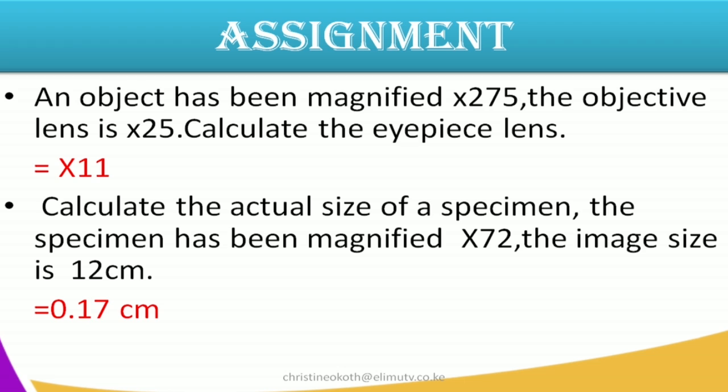Starting with the assignment, question number one: an object has been magnified 275 times and the objective lens is 25. You're supposed to calculate the eyepiece lens. It will be the total magnification divided by the objective lens. So you take 275 divided by 25 and you get 11. The eyepiece lens is 11, and remember you have to write the times sign to show that it has been magnified 11 times.